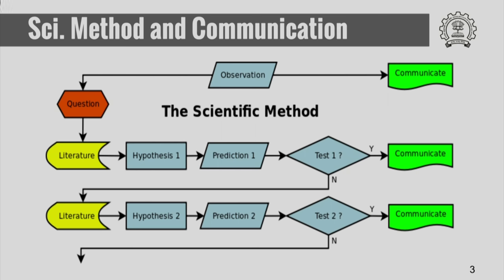We come up with predictions based on these models and construct tests to validate our predictions. If we are satisfied, we communicate our observations, our model, and our hypothesis to the body of scientific literature. Somebody else then examines our hypothesis and our model, questions it, probably comes up with an alternate hypothesis or a better explanation, and again they construct tests to validate their predictions. When satisfied, they communicate it to the scientific body of literature, and so on.